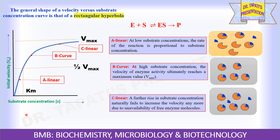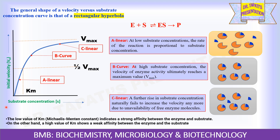From this graph, you can see that the Km value, or Michaelis-Menten constant, is equal to the substrate concentration at half Vmax. A low value of Km indicates a strong affinity between the enzyme and substrate, whereas a high value of Km shows weak affinity between the enzyme and substrate.